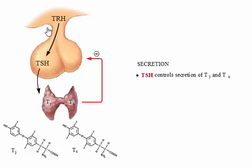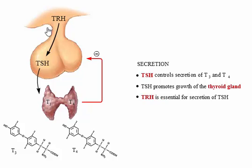Thyrotropin, or thyroid-stimulating hormone, controls secretion of thyroid hormone and promotes growth of the thyroid gland. Thyrotropin-releasing hormone is essential for secretion of thyroid-stimulating hormone. Thyroid-releasing hormone is secreted in a circadian rhythm. Stress may inhibit its release, but there are no known factors in adults that control its secretion.